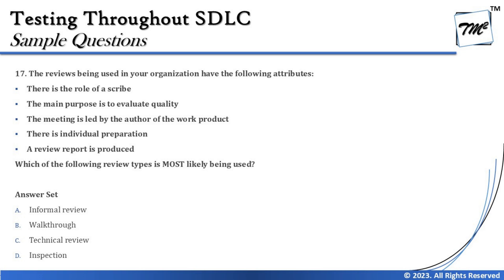The question says the review being used in your organization has the following attributes. They have given you the characteristics of the type of review being conducted, and at the end they want to know what the review type is. The characteristics are: there is a role of scribe, the main purpose is to evaluate quality, the meeting is led by the author of the work product, there is individual preparation, and a review report is produced.